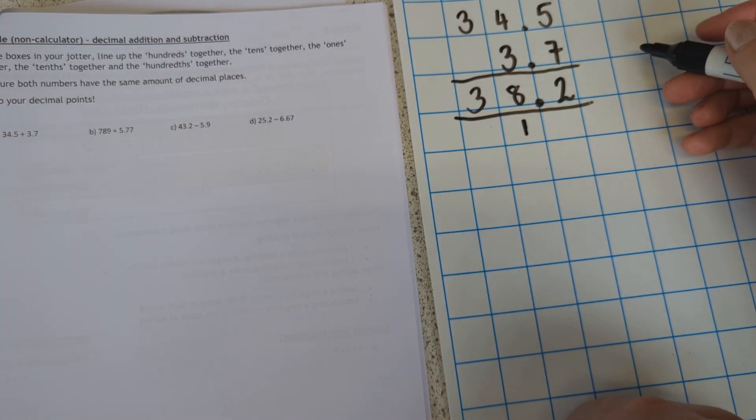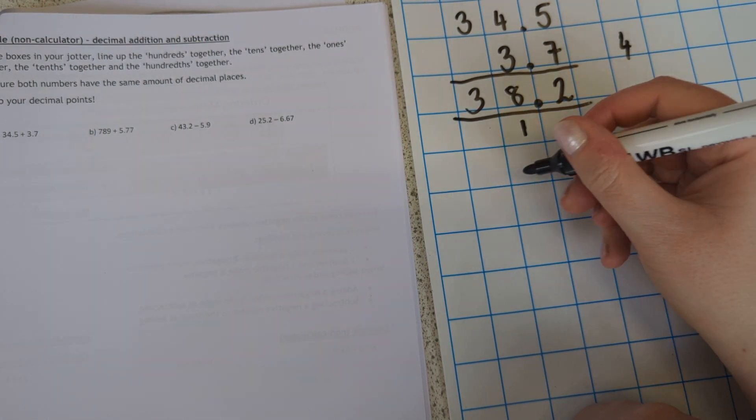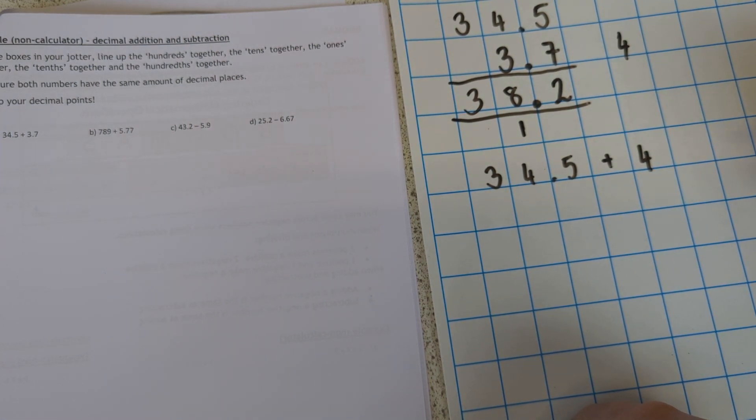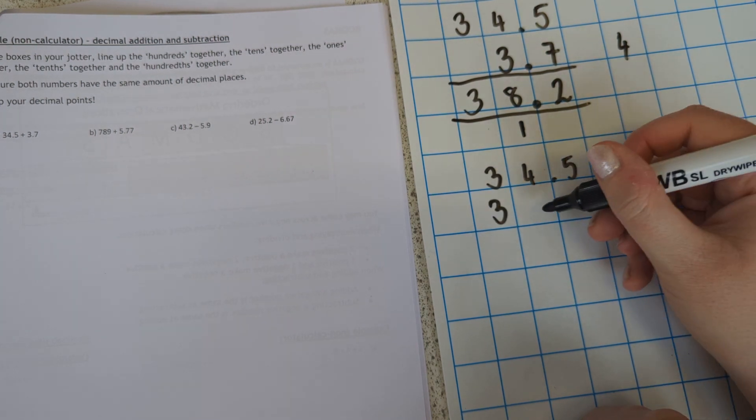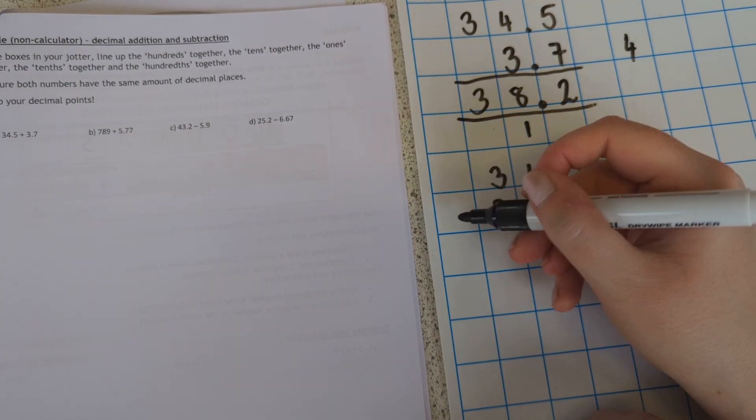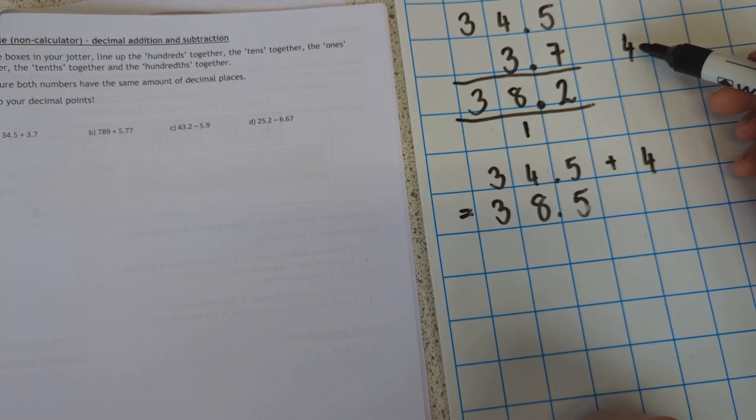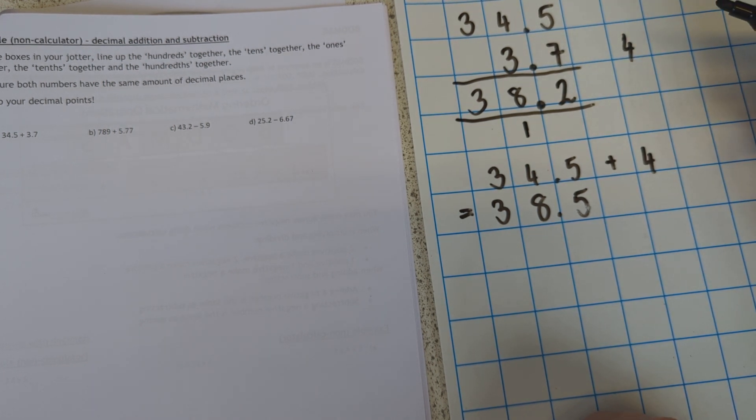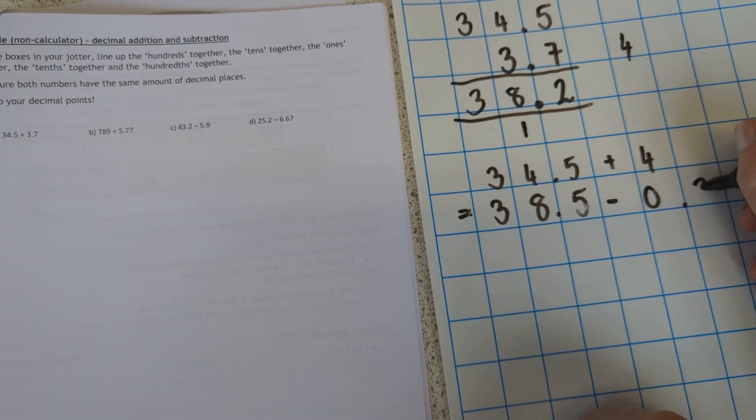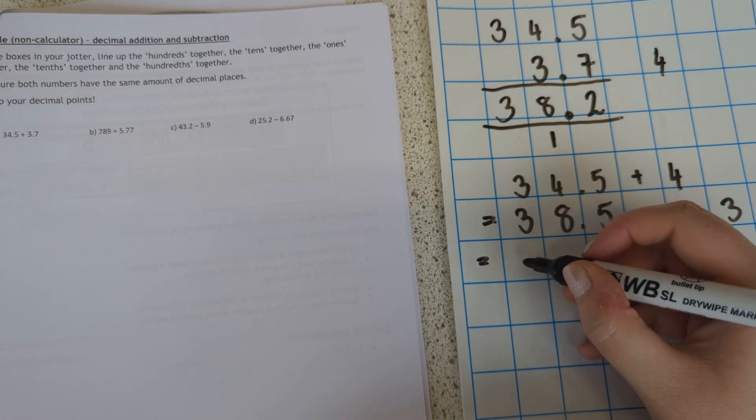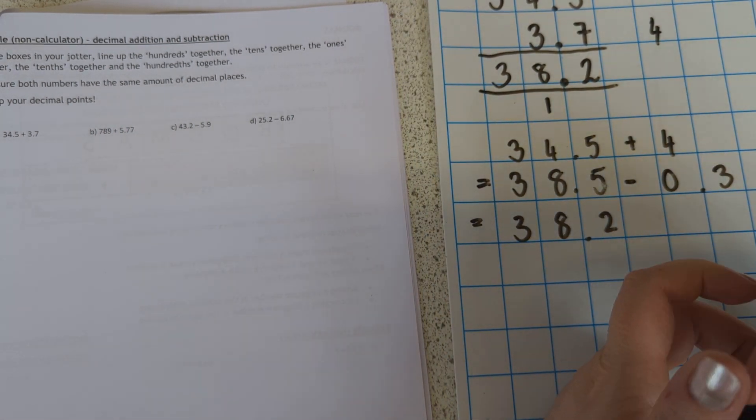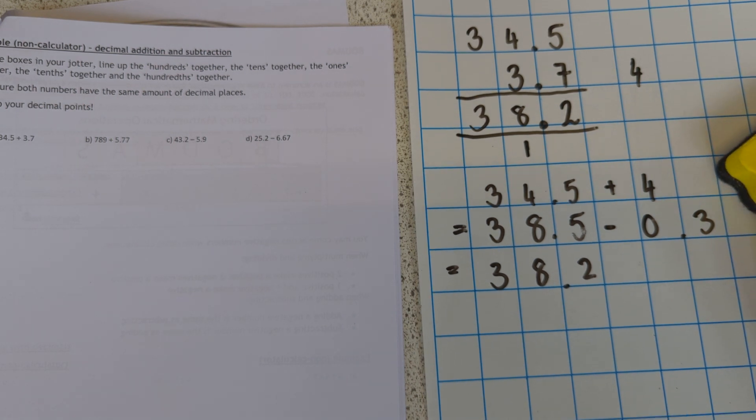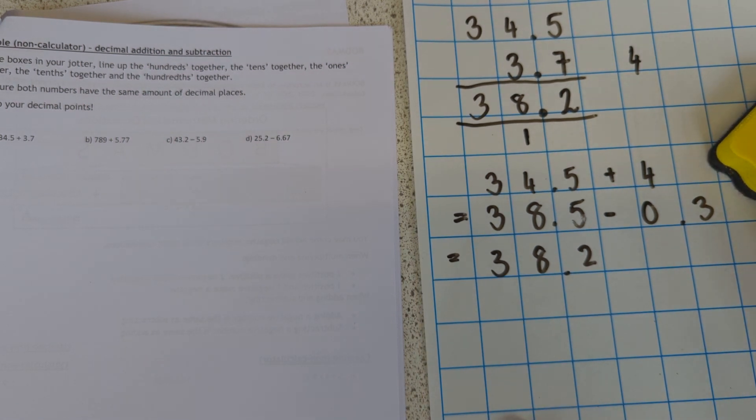Obviously, there are different ways of doing it. So you could say, well, 3.7 is kind of near 4. So you could do 34.5 plus 4, which would give you 38.5. And then you could be like, well, 4 is 0.3 bigger than that. So I've added an extra 0.3 on. So I need to take away 0.3 from this, which is 38.2. So you could do it that way as well. You could also, as I said, there are multiple ways of doing it. These are just a couple. It's totally up to you how you kind of approach these, as long as it's accurate and efficient, ideally.